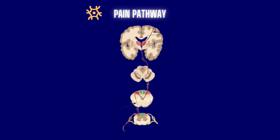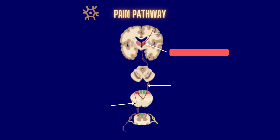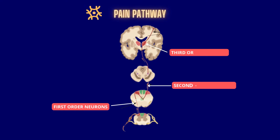Basically, within the pain pathway, there are three orders of neurons that carry action potentials signaling pain: first-order neurons, then second-order neurons, and lastly third-order neurons.